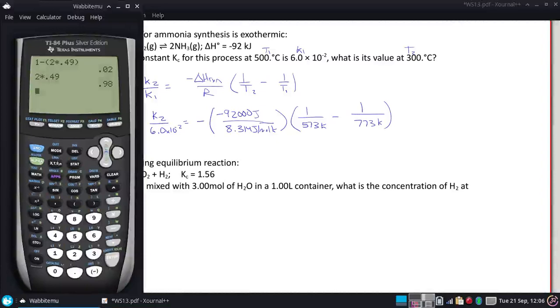Bring up our calculator here. Solve everything on the right: 92,000 divided by 8.314 times the inverse of 573 minus the inverse of 773.